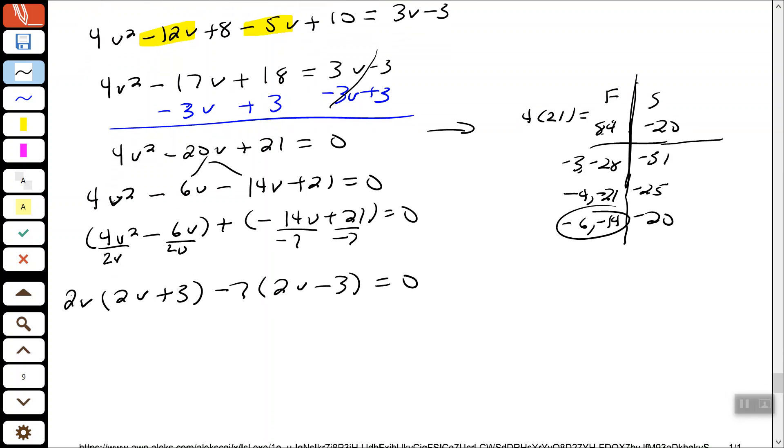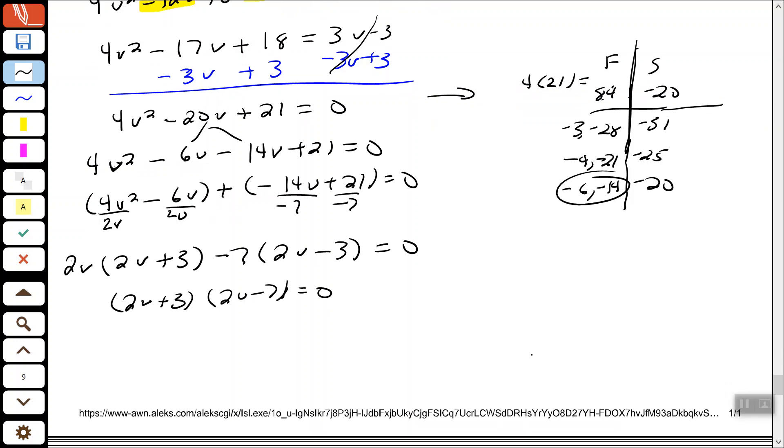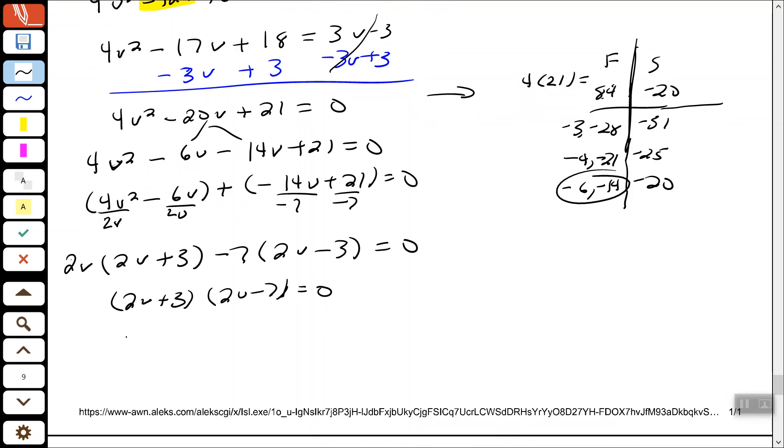And then the final step of factoring is to factor out the common binomial. And then to finish solving this equation, we want to set each one of our factors equal to 0 and solve.